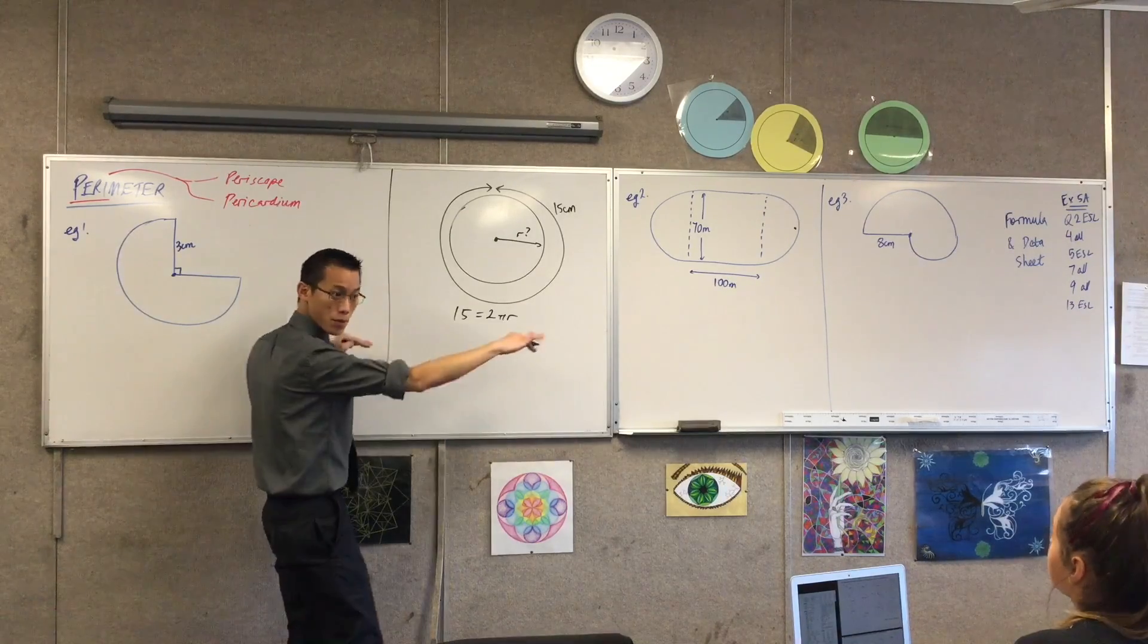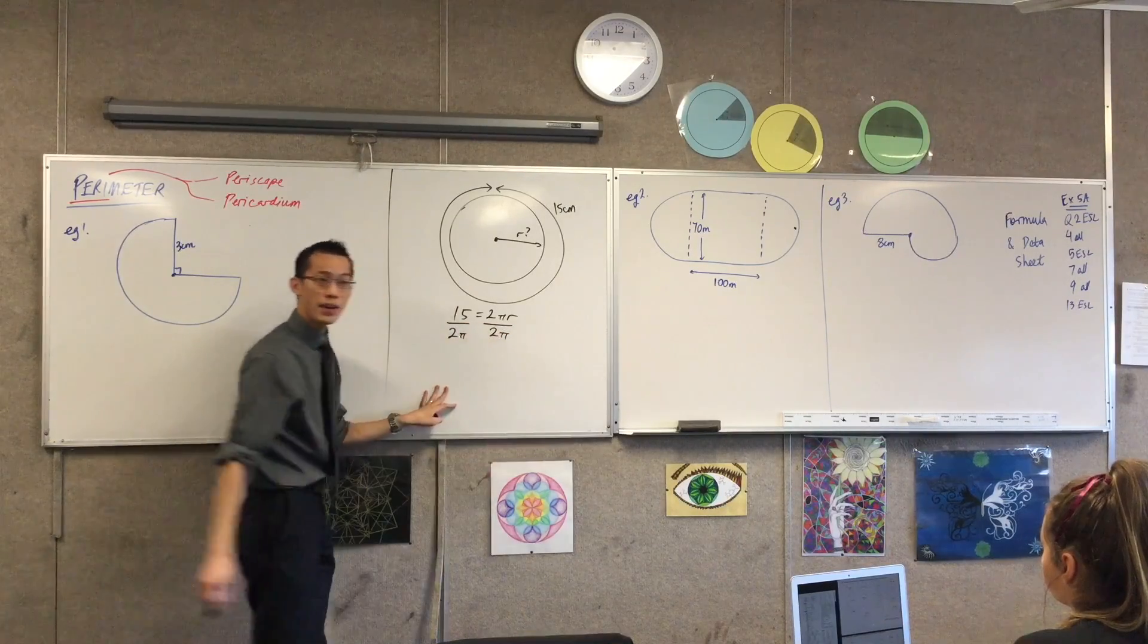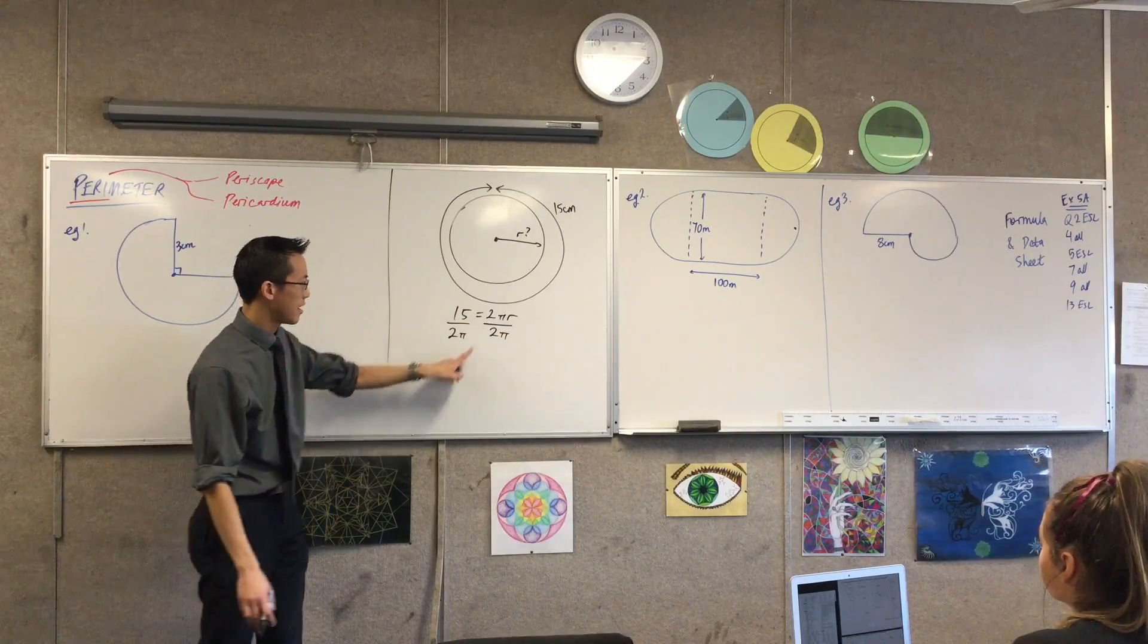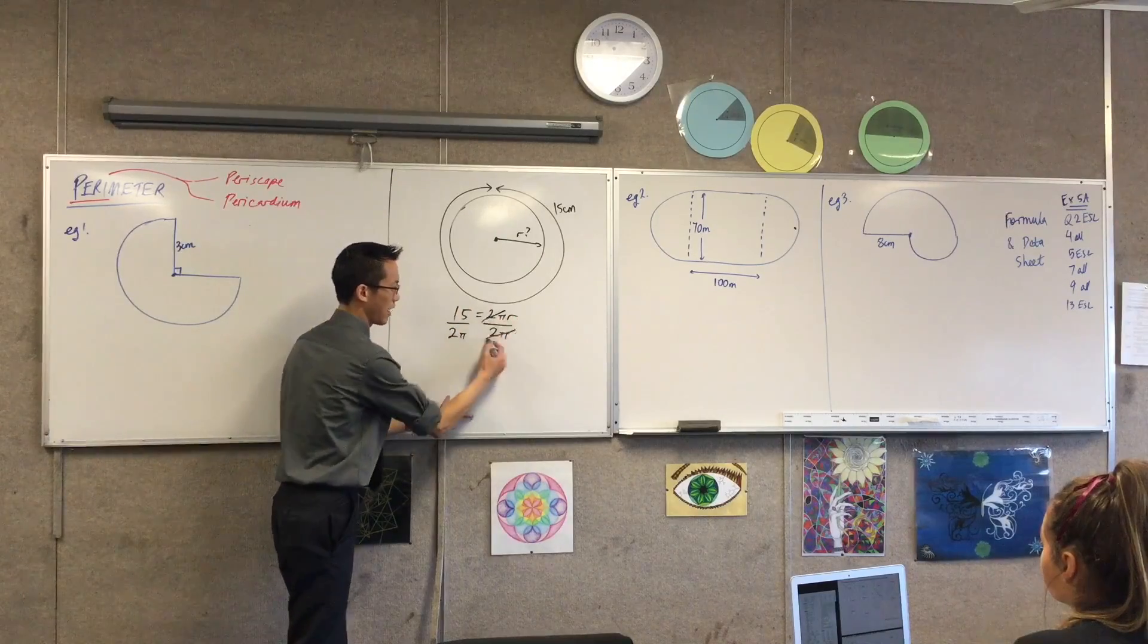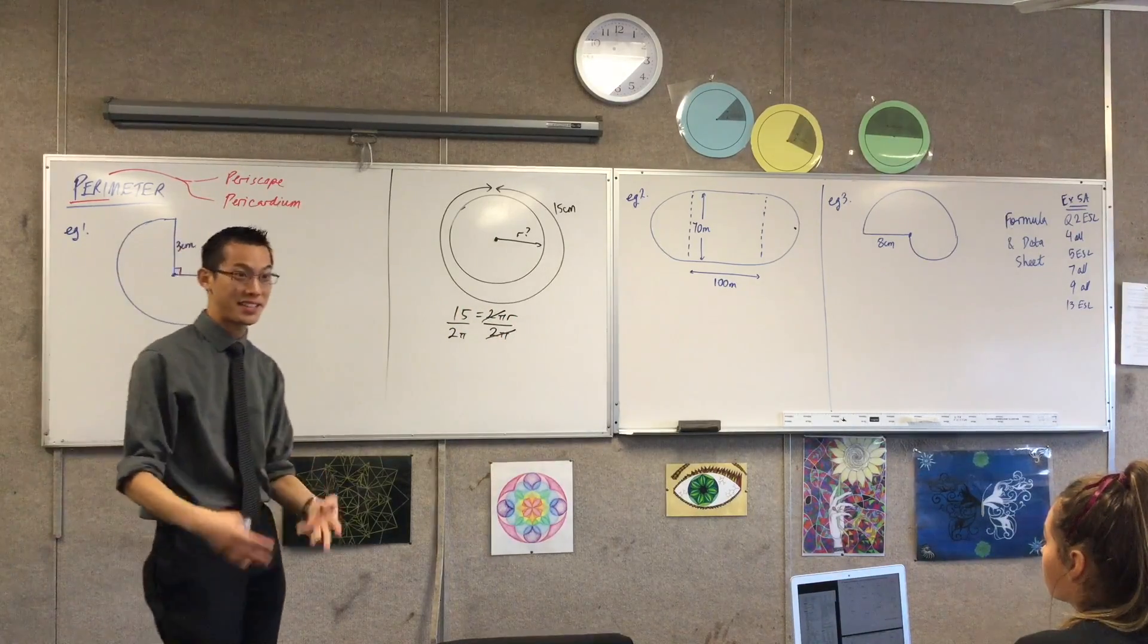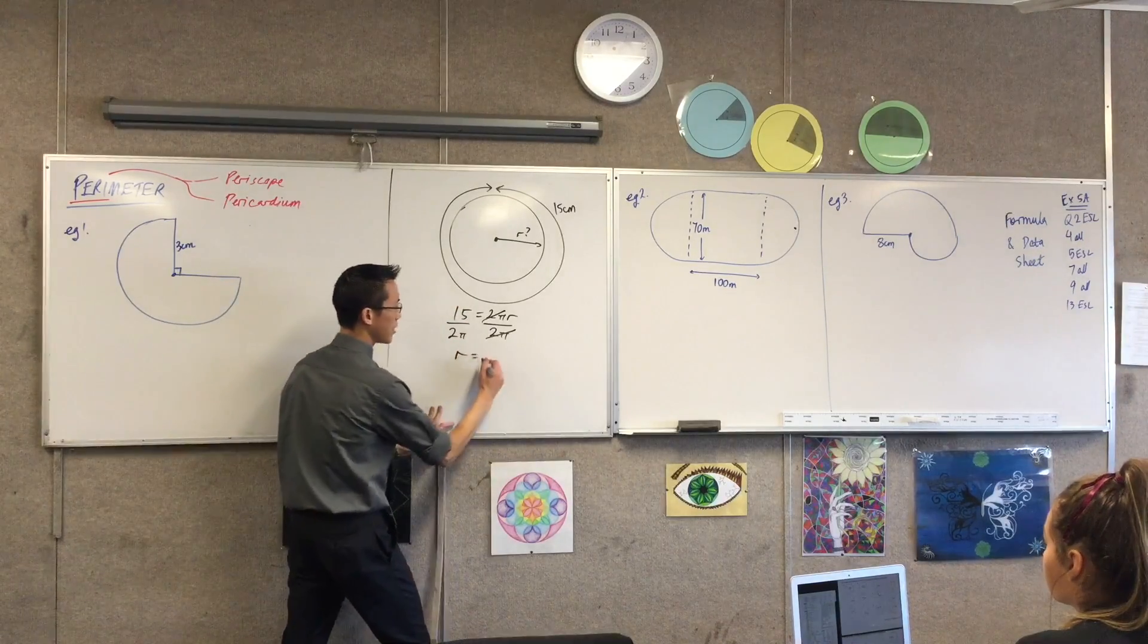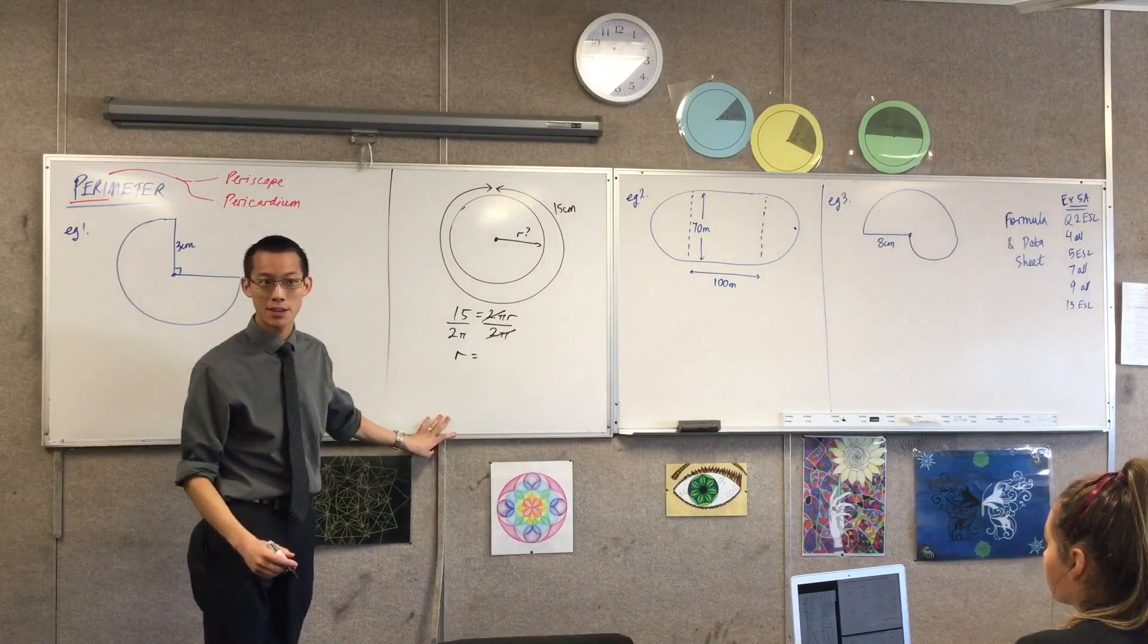Yeah, I'm going to divide through both sides, yeah? So divide this by 2π and divide this by 2π. Does that make sense? Now, the icky thing about this, you cancel, cancel, but as you know, when you're playing with your calculator, π is a messy number, right? So you're going to get something a bit gross out of this. You're going to get r equals, can someone actually punch in 15 divided by 2π for me?